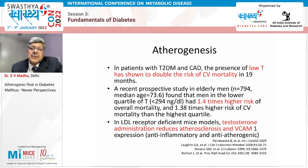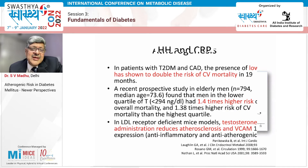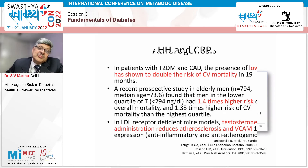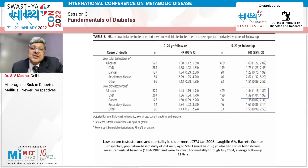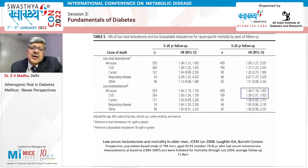There is a 1.4 times higher risk of CV mortality in those with a low quartile of testosterone. In animal models, testosterone administration reduces atherosclerosis. CRP and inflammatory markers are significantly higher in those with hypogonadotropic hypogonadism. A long-term follow-up study over 11-12 years showed all-cause and CVD-related mortality with hazard ratios of nearly 1.4 times in hypogonadal diabetics.